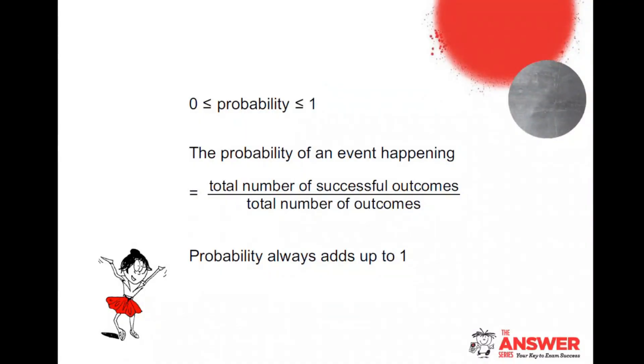The probability of an event happening is the total number of successful outcomes divided by the total number of outcomes. That's a formula that learners need to understand. When you see the word probability, you need to know what are the total number of ways you can do it and what are the successful number of ways.